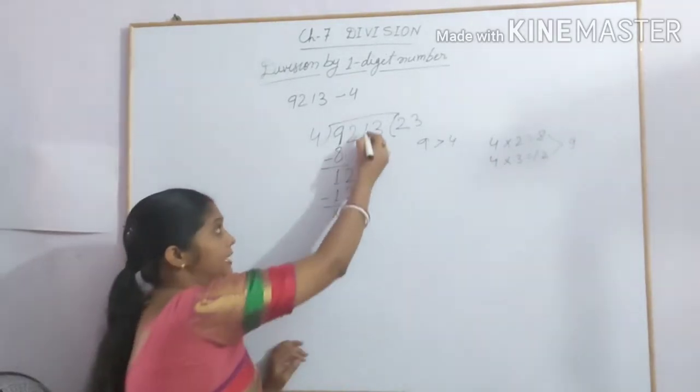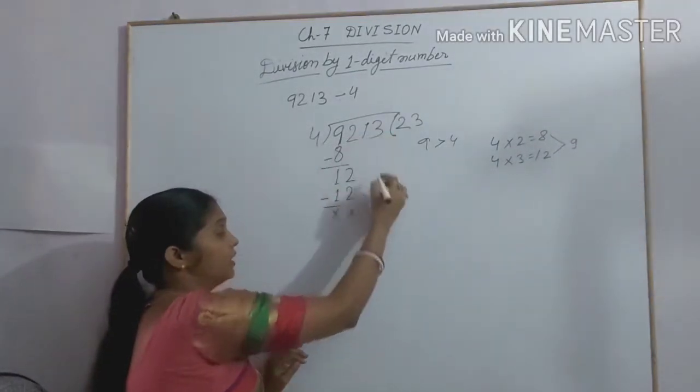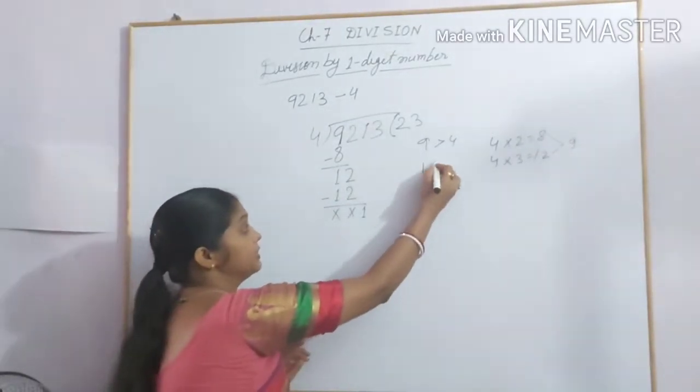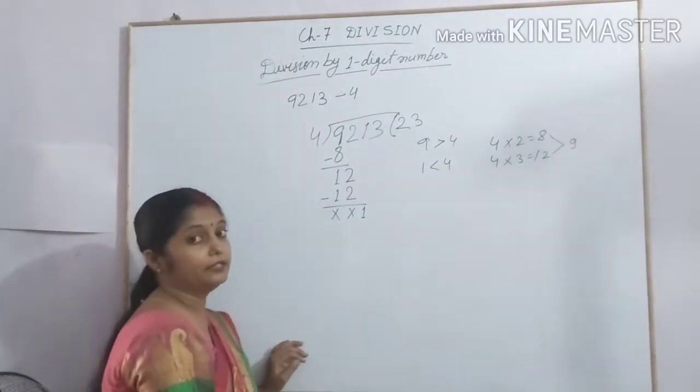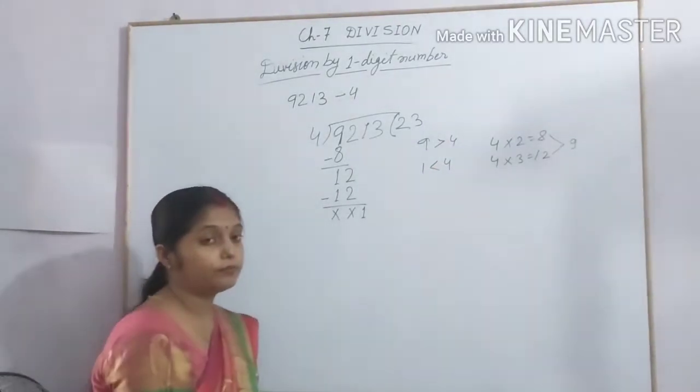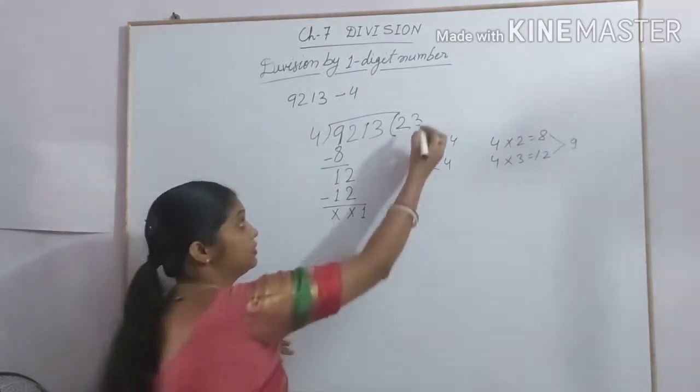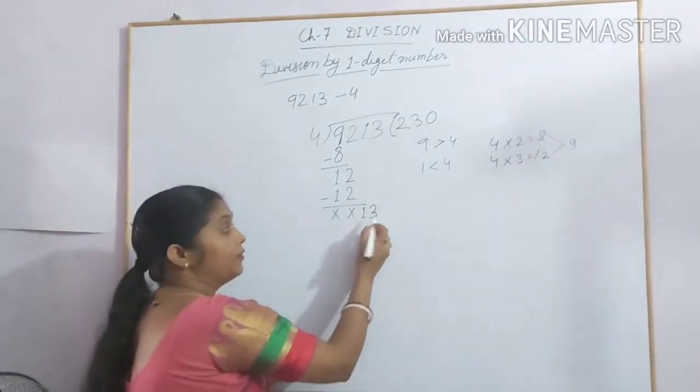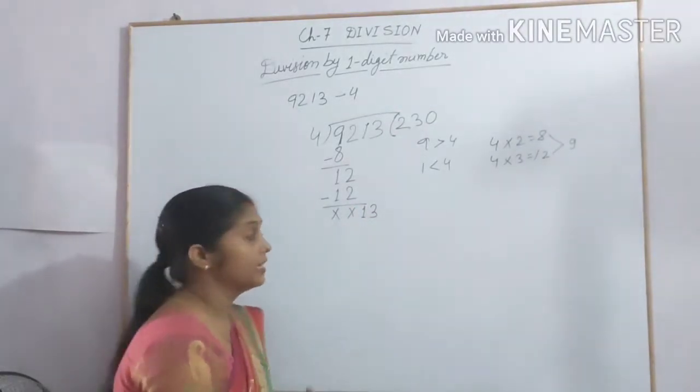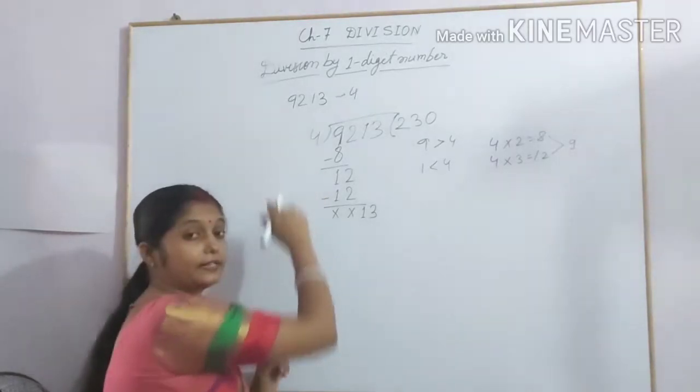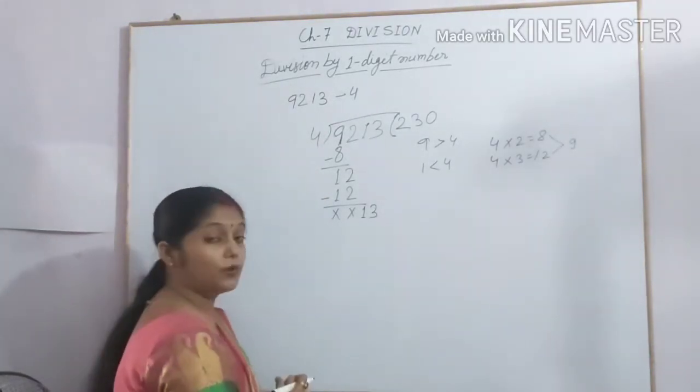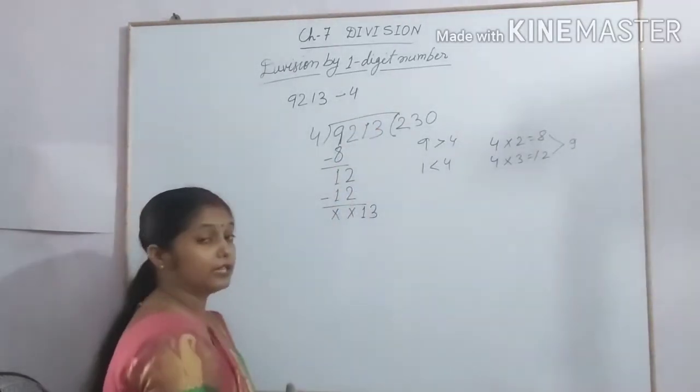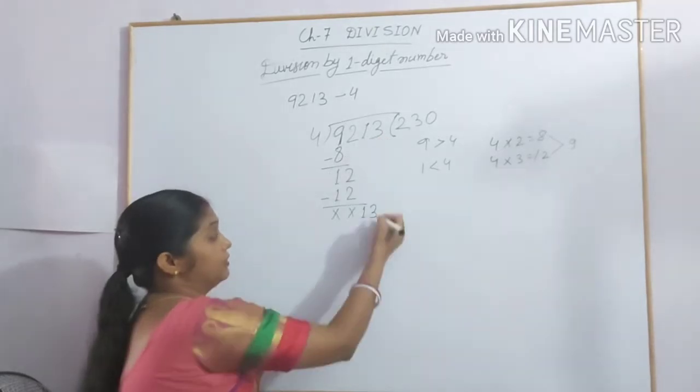Now bring down the next digit. The next digit is 1. We bring down 1 here. Here we see that 1 is less than 4. We can't divide 1 by 4. So what we can do? We put here 0 and bring the next digit. When we can't divide the digit by the divisor, we have to put 0 in the quotient and then bring down the next digit. So we bring down 3 here.